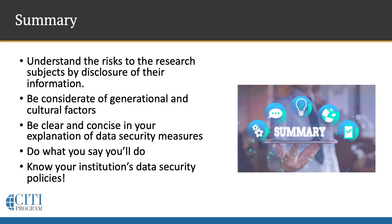Do what you say you'll do in the informed consent document, and know your institution's data security policies. Many questions I get from student researchers are: 'My consent form said I'd do this, but I really want to do that.' The answer is you can't, because that's not what you told your subject. If you said you'd de-identify all information and not share it, but now you want to collaborate and re-contact participants for additional data, that's not what your consent document said. You either can't do it, or you go back and re-consent your subject for that future identifiable use — because ultimately, it is their information.